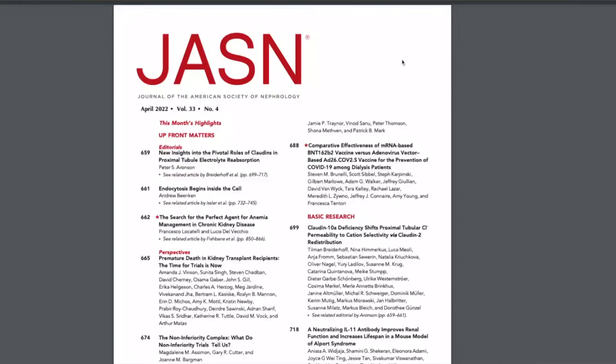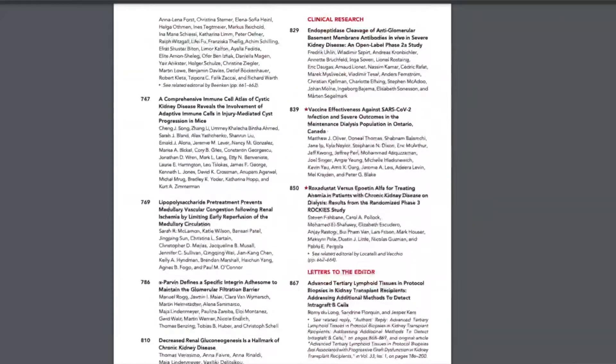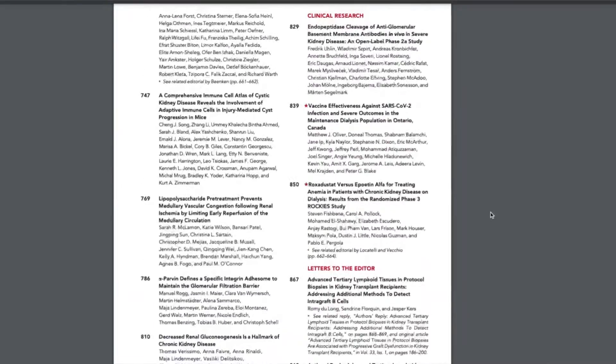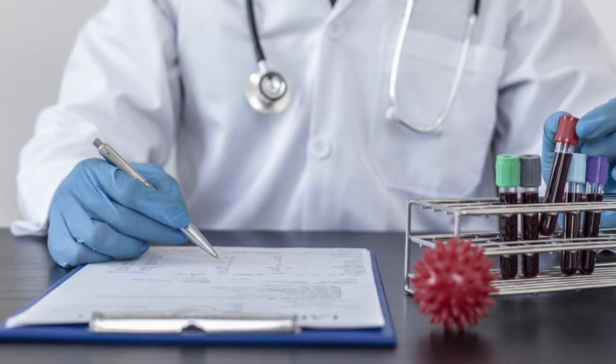The next S is for study design — specifically what type of original research that journal likes to take. You won't find this information in the author guidelines, but you can find it in two places: the table of contents and previous archives. Looking at the table of contents, you can see how many clinical trials they take, how many observational studies, whether they take case reports, or papers on translational research. If a journal mostly publishes translational science but your research is on patient-centered outcomes, then you know it's not a suitable journal to submit to.